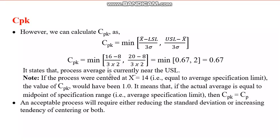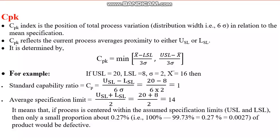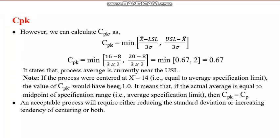With CP equal to 1 but CPK only 0.67, CPK is giving the actual capability. It states that the process average is currently near the upper specification limit. If the process were centered at X-bar equal to 14 (the midpoint), CPK would have been 1, but since X-bar is 16, it is reduced to 0.67.